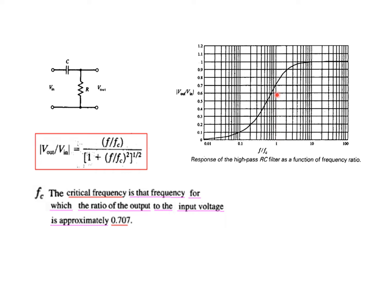This point here where it is written one, that is the critical point or the critical frequency point where the amplitude is actually 0.707. We can define the critical frequency as that frequency for which the ratio of the output to input voltage is approximately 0.707.